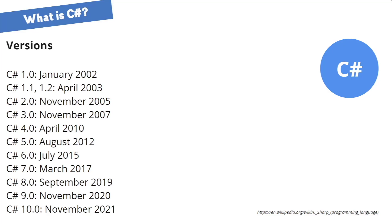In the past, it usually took one to three years for a new language version, which often contained many different changes. Starting with .NET 5 in November 2020, we will get new C Sharp versions yearly, including a smaller set of changes. Whenever you have the chance to work on a greenfield project, make sure to use the latest .NET and C Sharp versions. Whenever you work on an existing project, make sure you understand what framework and language versions are used.